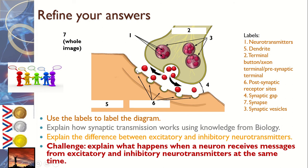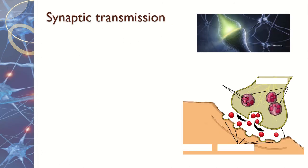On the other side of the synapse, there are receptors — like little jigsaw pieces — that only fit certain types of neurotransmitters. When a neurotransmitter fits into a receptor site, the message is passed along and taken up by the next neuron. This whole receiving end is the dendrite, with receptors on the ends of dendrites picking up the messages.